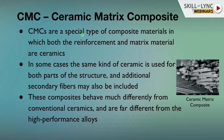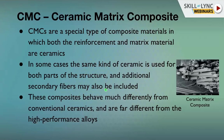Ceramic Matrix Composites are a special type where both reinforcement and matrix are ceramics. Sometimes the same ceramic — such as silicon carbide — is used for both. In other cases, carbon may be the matrix with boron nitride as reinforcement. Secondary fibers such as boron nitride may also be added alongside the primary silicon carbide reinforcement.